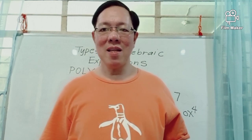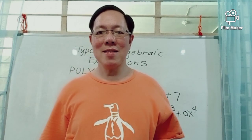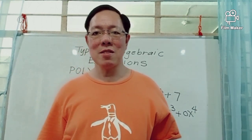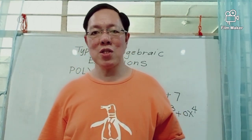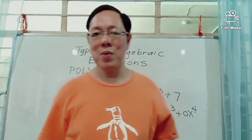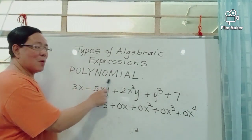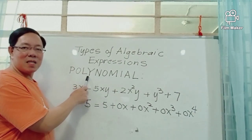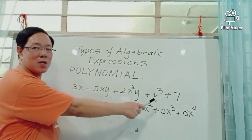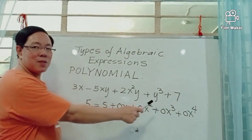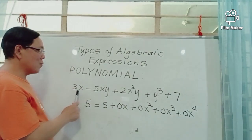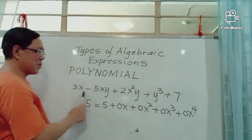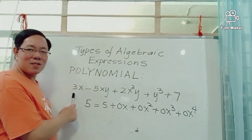Can we have an algebraic expression with more than three terms? Yes. Algebraic expressions with more than three terms are called polynomials. The prefix 'poly' means many. For example, 3x minus 5xy plus 2x squared y plus y cubed plus 7 has five terms and is called a polynomial.